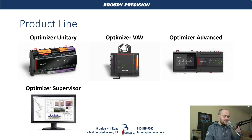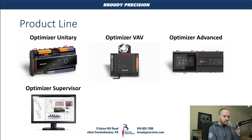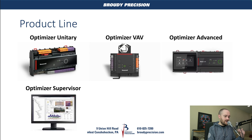So what is the Optimizer product line? It is not just a single product — it's actually a whole suite of products. The first piece is the Optimizer Unitary, a unitary controller. Then there's the Optimizer VAV, a typical VAV controller with built-in actuator and pressure sensor. Next is the Optimizer Advanced, their latest and greatest — a native Niagara device with additional features you don't get on something like a JACE 9000. And then we have Optimizer Supervisor, which is their branding of the Niagara software. They're no longer using the WEBS name; the software is now referred to as Optimizer.